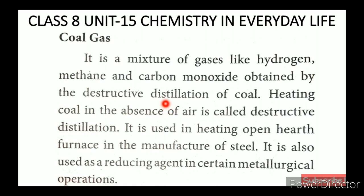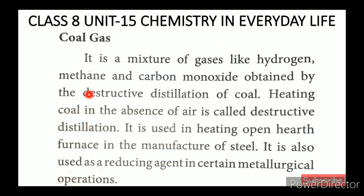Coal gas is a mixture of gases — hydrogen, methane, and carbon monoxide — obtained by the destructive distillation of coal. Destructive distillation means heating coal in the absence of air. It is used in heating open-hearth furnaces in the manufacture of steel. It is also used as a reducing agent in certain metallurgical operations.